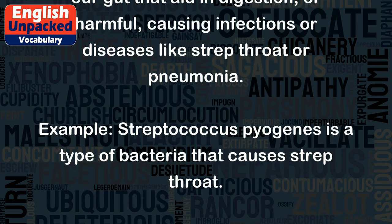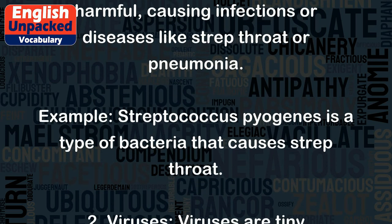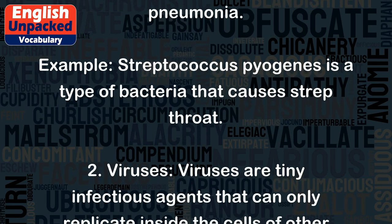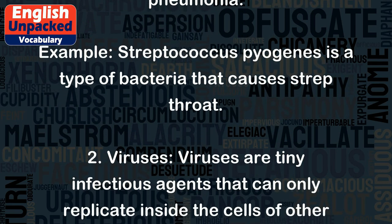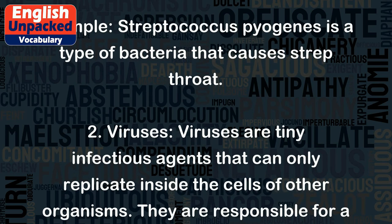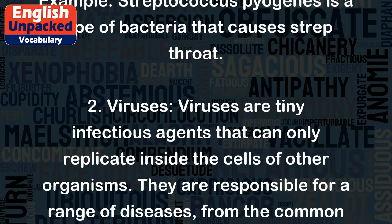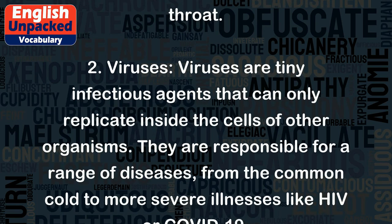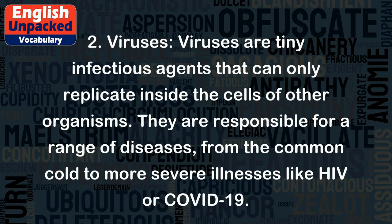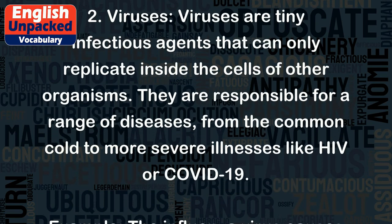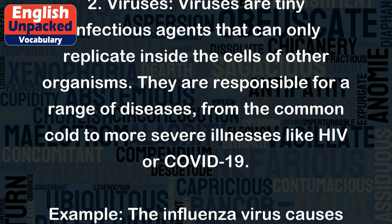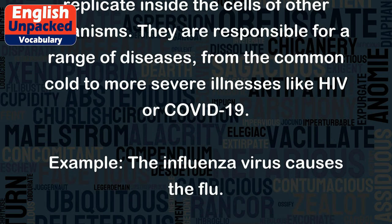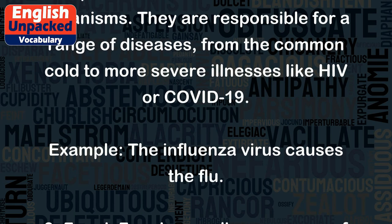Example: Streptococcus pyogenes is a type of bacteria that causes strep throat. 2. Viruses. Viruses are tiny infectious agents that can only replicate inside the cells of other organisms. They are responsible for a range of diseases, from the common cold to more severe illnesses like HIV or COVID-19.